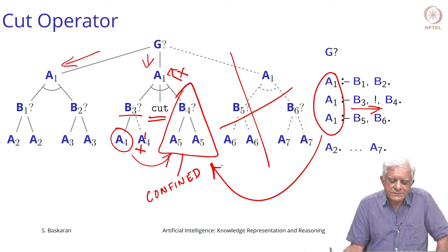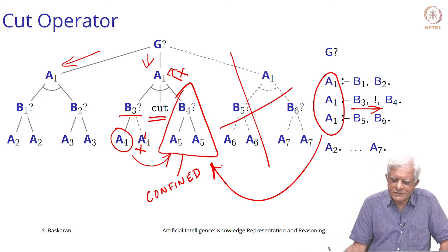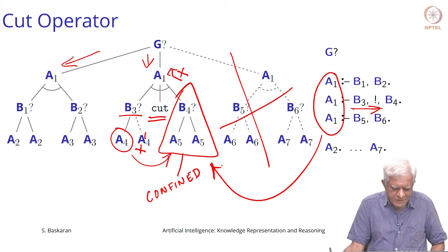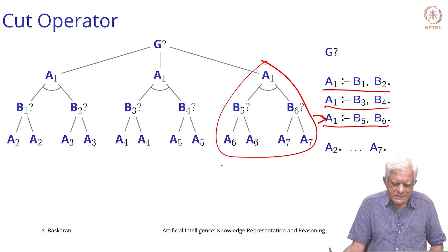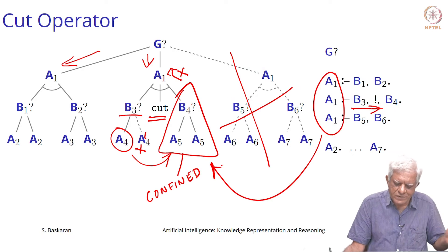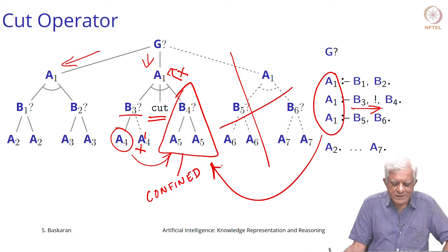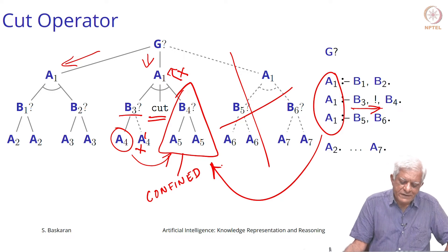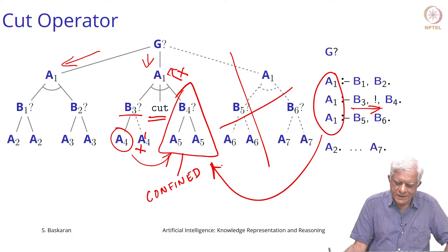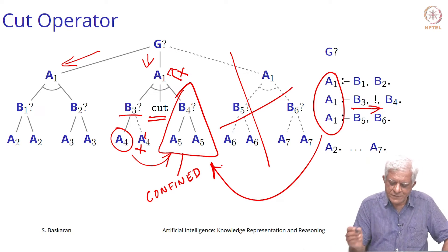Welcome back. I hope you have thought a little bit about what cut is doing. In the normal course of events, search space search would go in a depth first manner, sweeping the tree from left to right. But if there is a cut operator somewhere in one of the rules, in this case the middle part of the sub tree which corresponds to the middle rule.